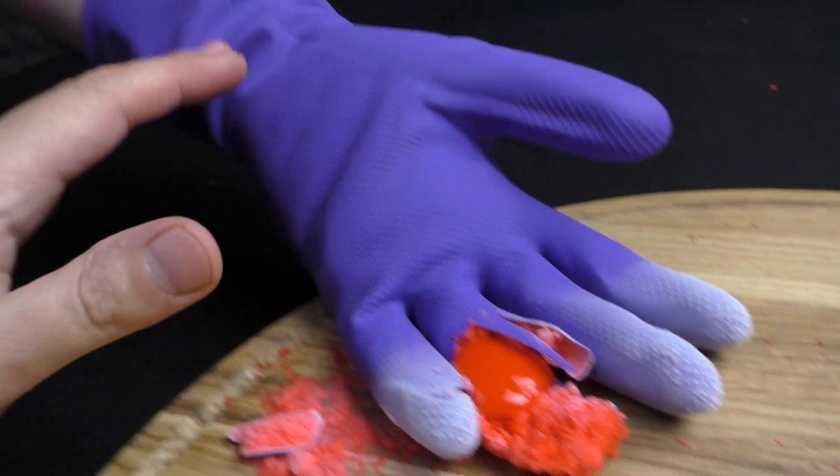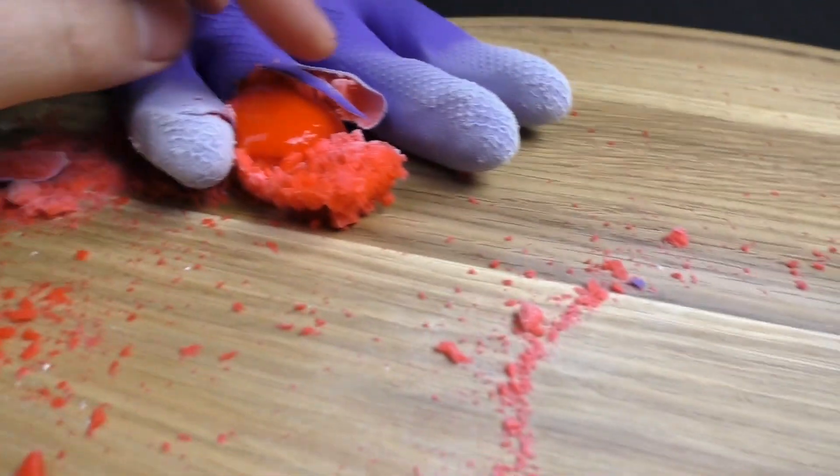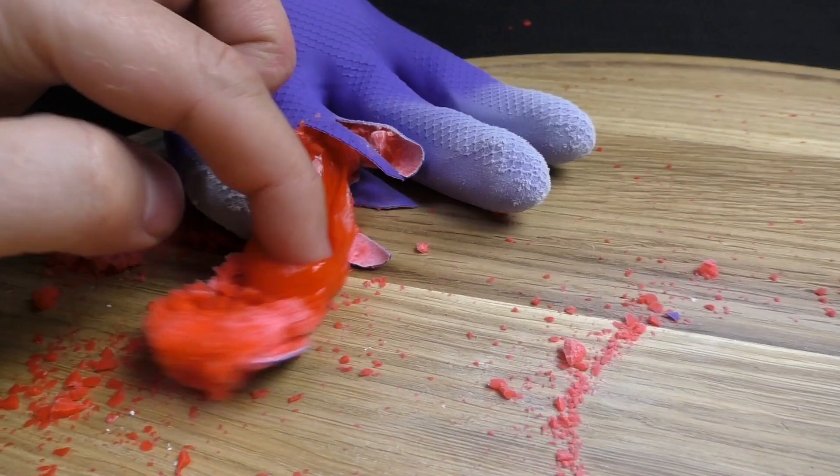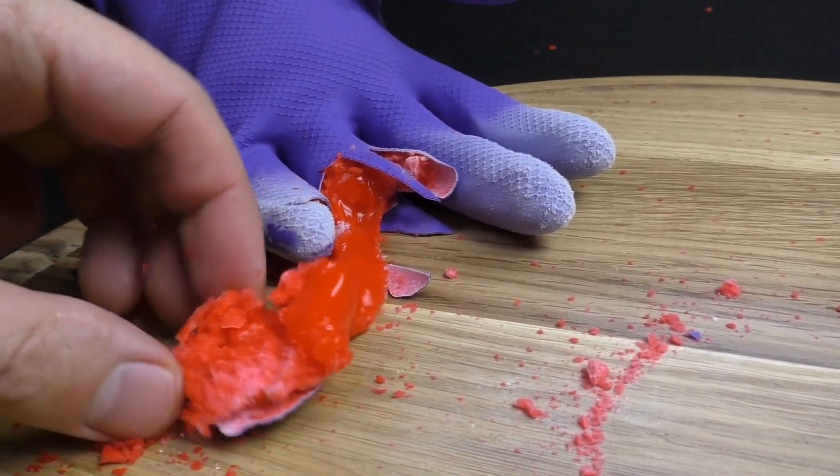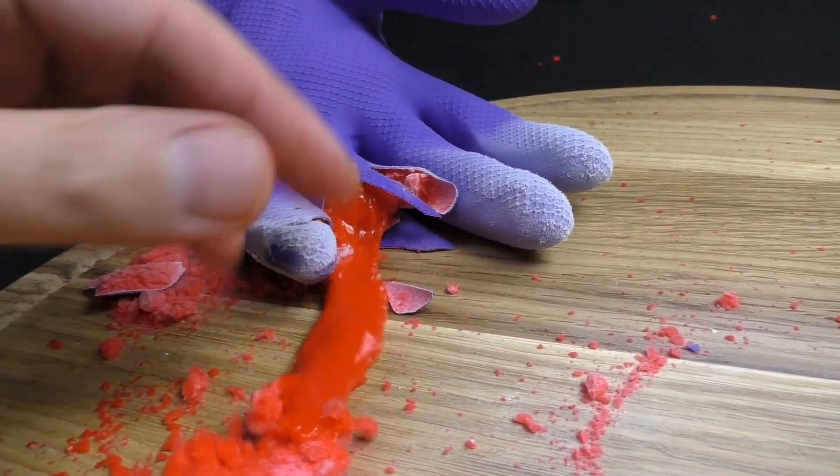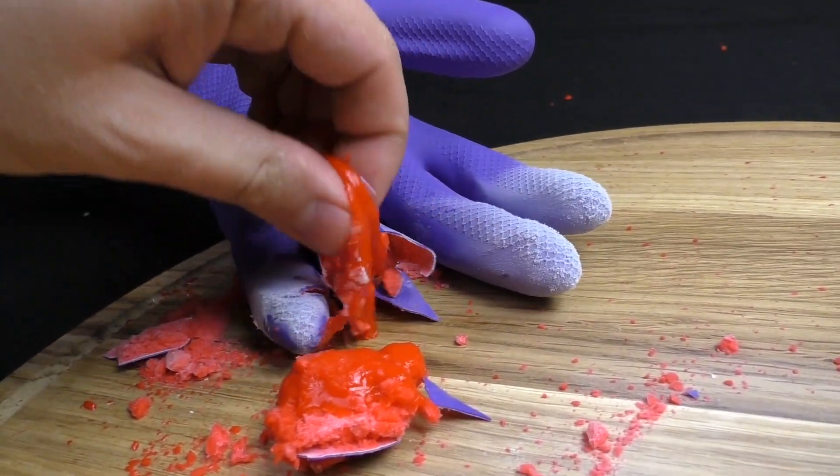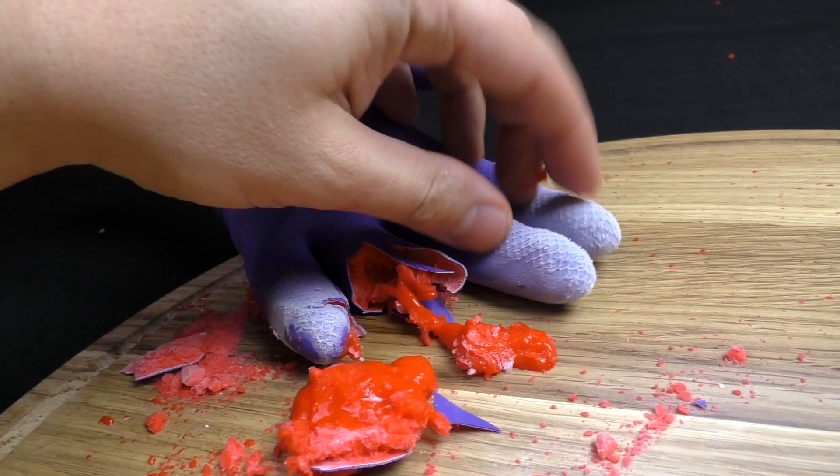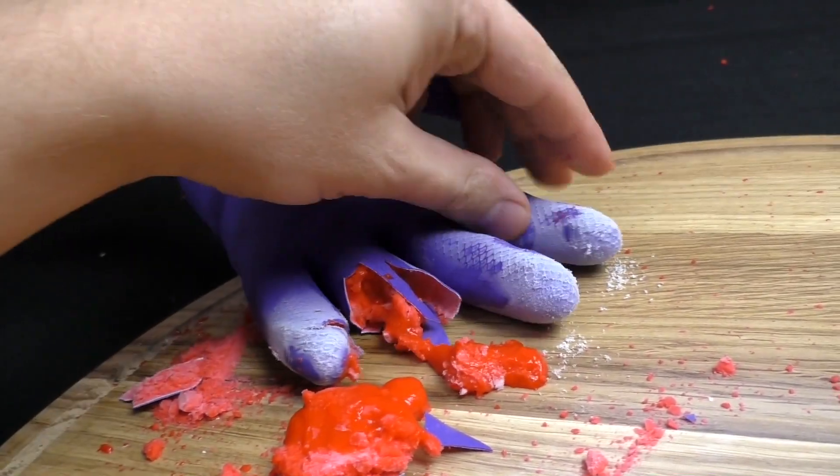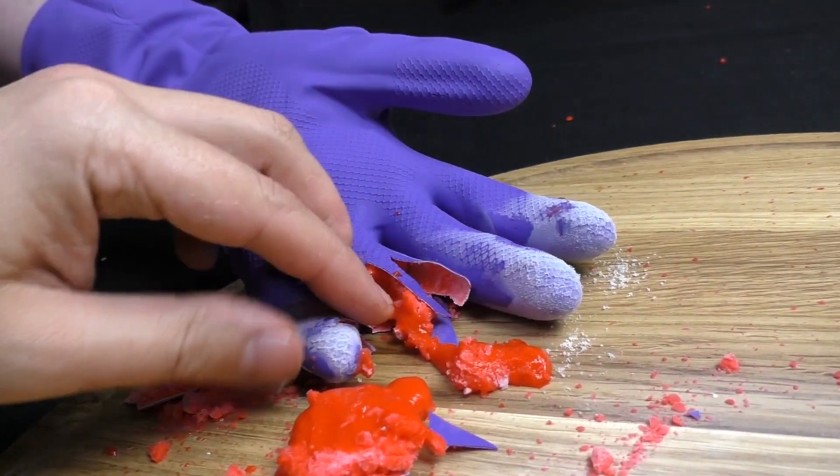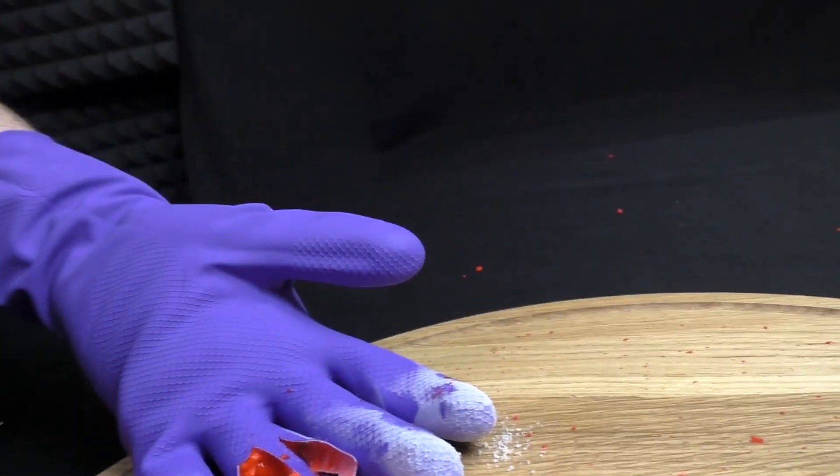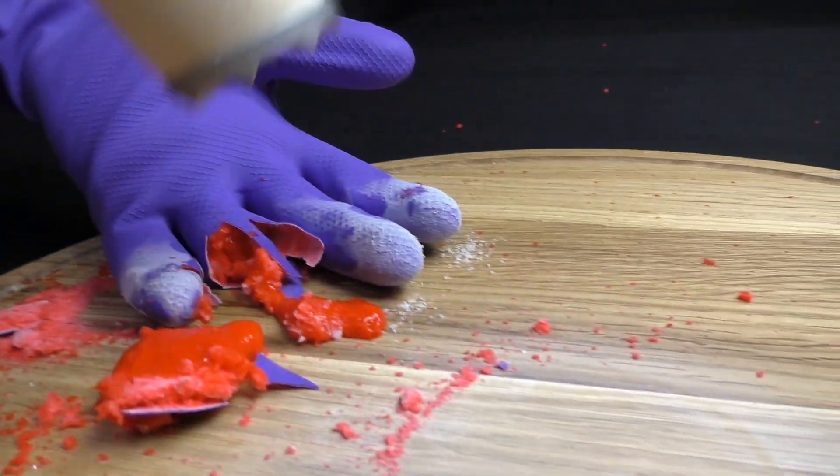Guys, that was just another prank. Everything is okay with my hand, and that is not blood or my flesh. That is just red slime completely frozen in liquid nitrogen, and it became just as hard as stone. Just check. Oh, let me try to break it.